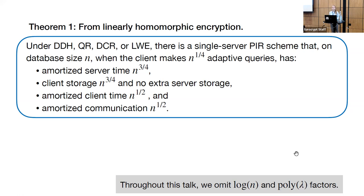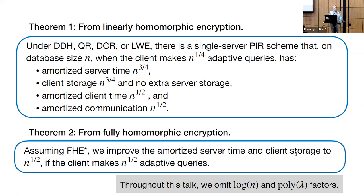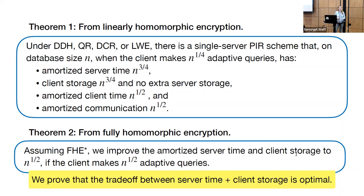We wondered if we can do better, and we proved that from stronger assumptions — namely from fully homomorphic encryption — we can. From FHE, we improve the amortized server time to √n and the client storage to √n, if our client makes at least √n adaptive queries. We also give a new lower bound which proves that the trade-off between server time and client storage is in fact optimal in the second FHE-based scheme.